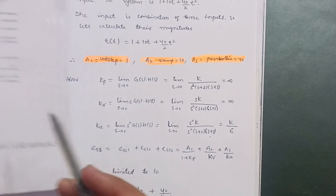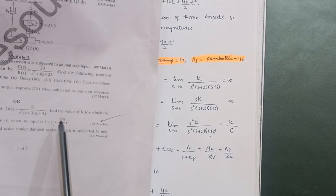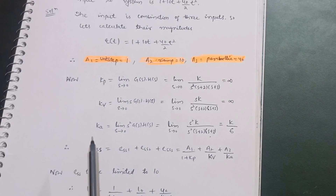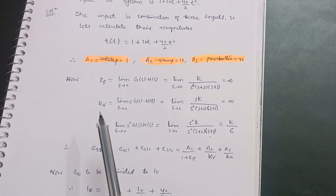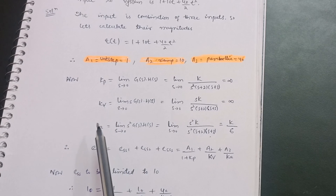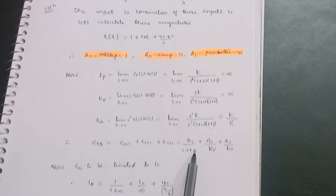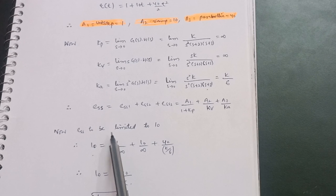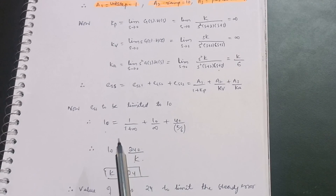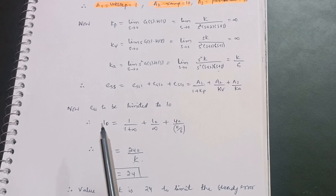This was your VTU 8-mark problem. It is a very simple problem — you just need to recognize the inputs, calculate the error coefficients Kp, Kv, and Ka, then substitute into the steady-state error formula to get the value of k. I hope you will tackle this problem in the examination. Thanks for watching.